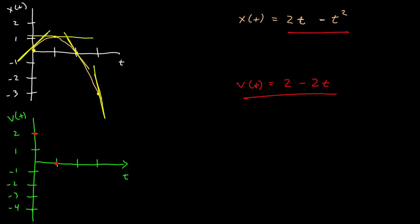At t equals 2, this is negative 2. And at 3, it's negative 4. And so, I have here, my velocity is now a straight line that's going from positive 2 to negative 4.